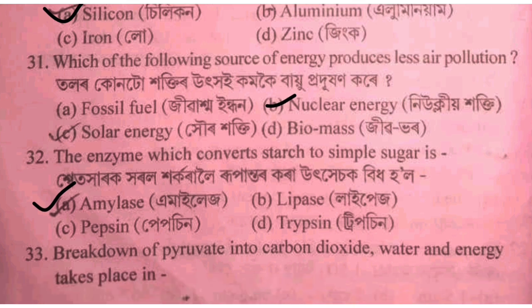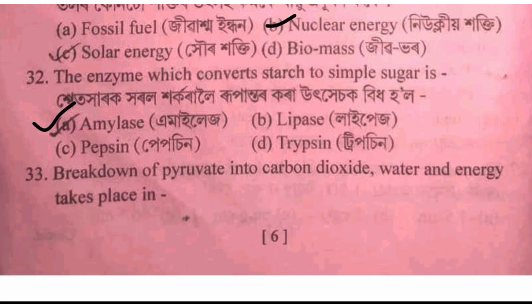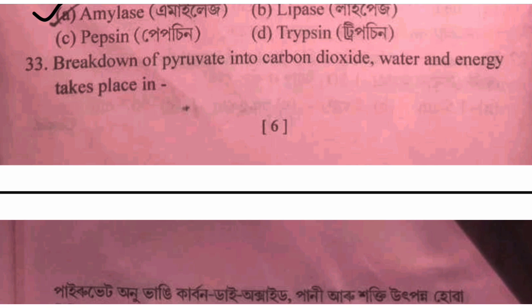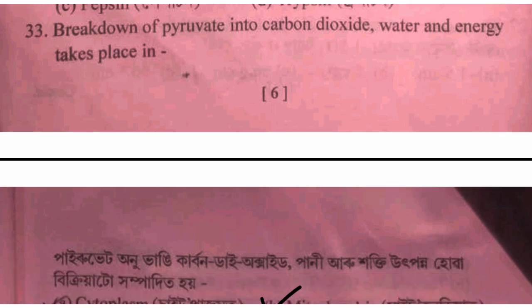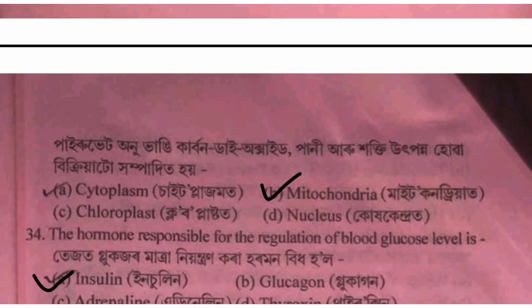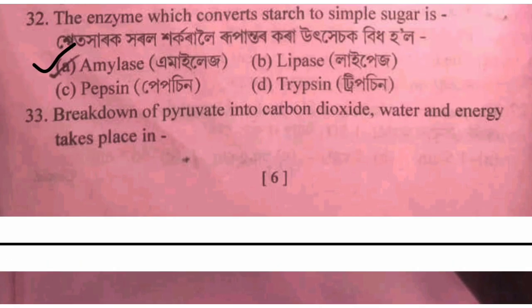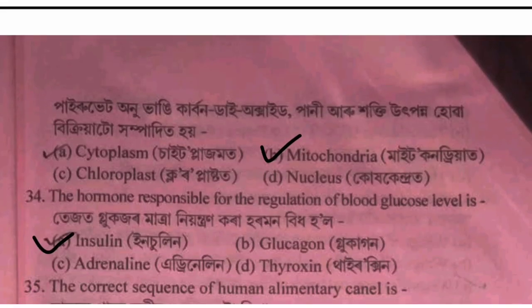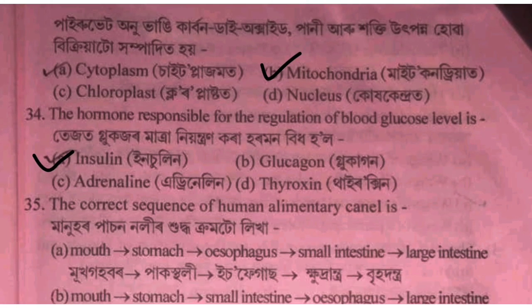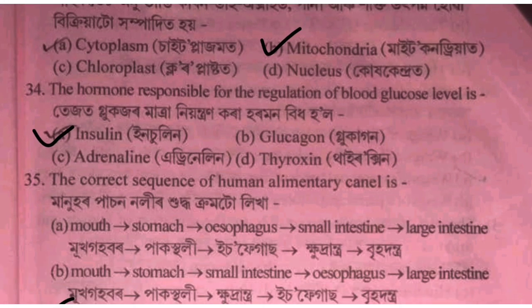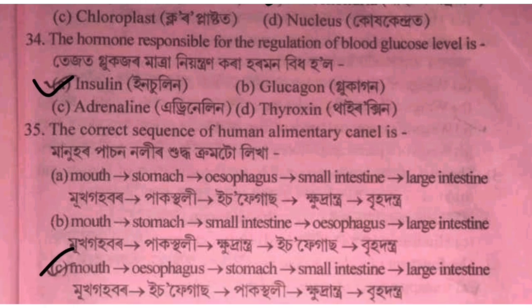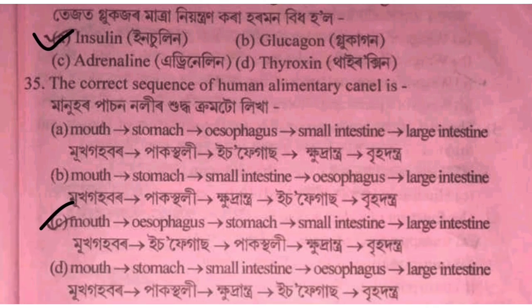Breakdown of glucose into carbon dioxide, water, and energy takes place in option B: mitochondria. The next question — the hormone insulin is option C.